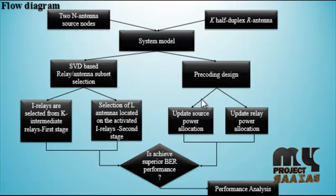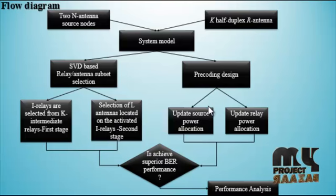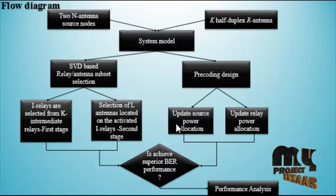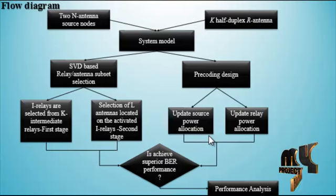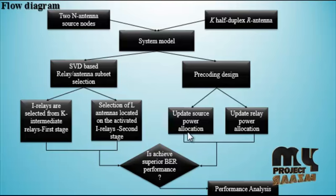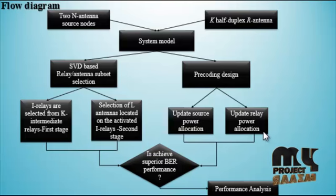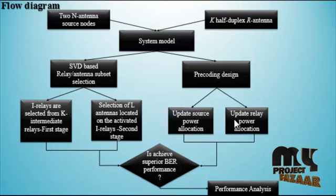In the pre-coding design, that is also subdivided into two parts. The first one is updated source power allocation, and the second one is updated relay power allocation. For updated source power allocation, we calculate the power. For updated relay power allocation, we calculate the relay to the source and relay.